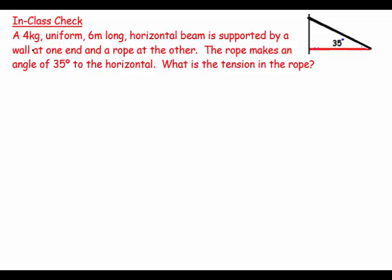Welcome. This question says a 4 kilogram uniform 6 meter long horizontal beam is supported by a wall at one end and a rope at the other. The rope makes an angle of 35 degrees to the horizontal. What is the tension in the rope?